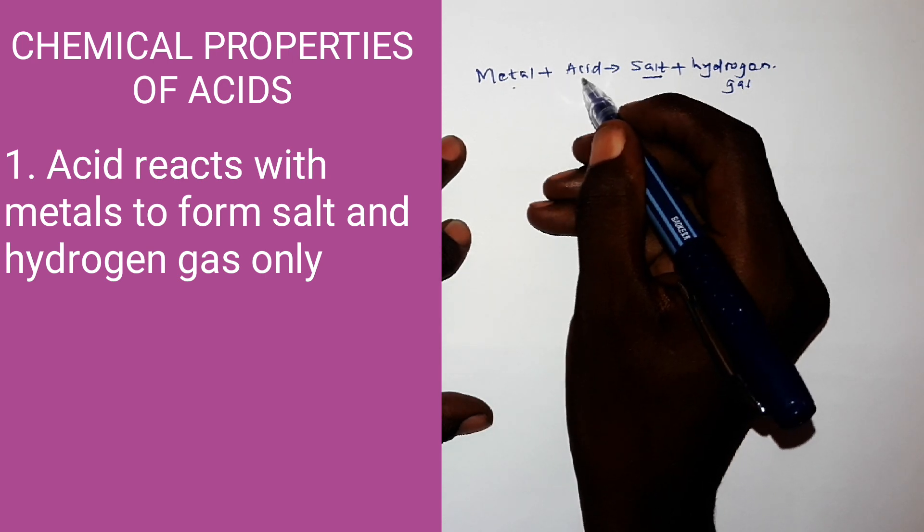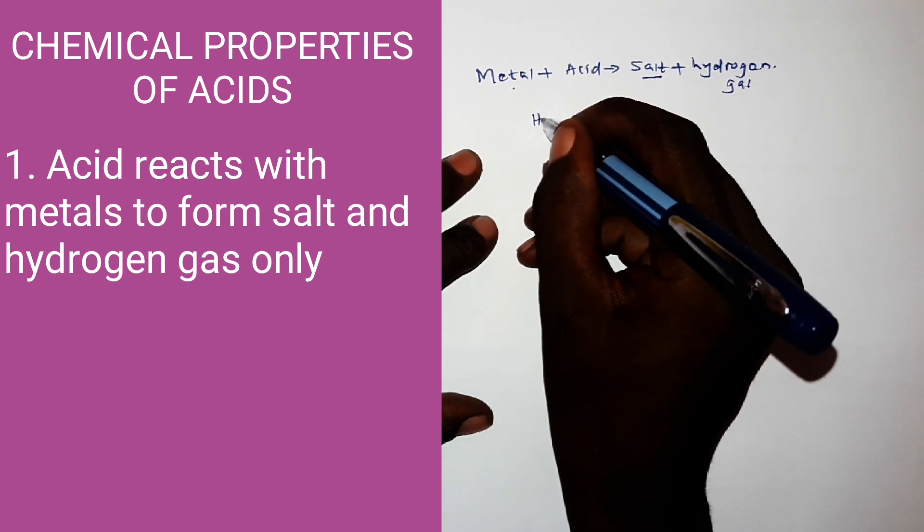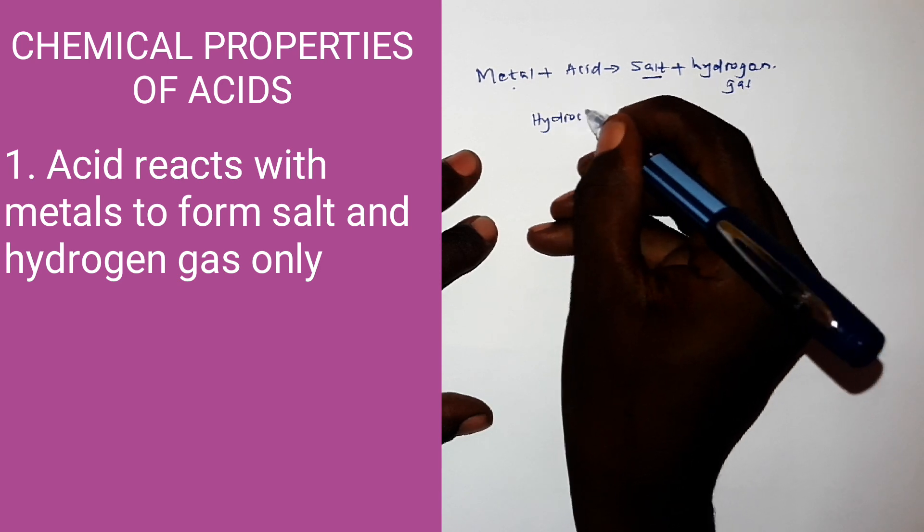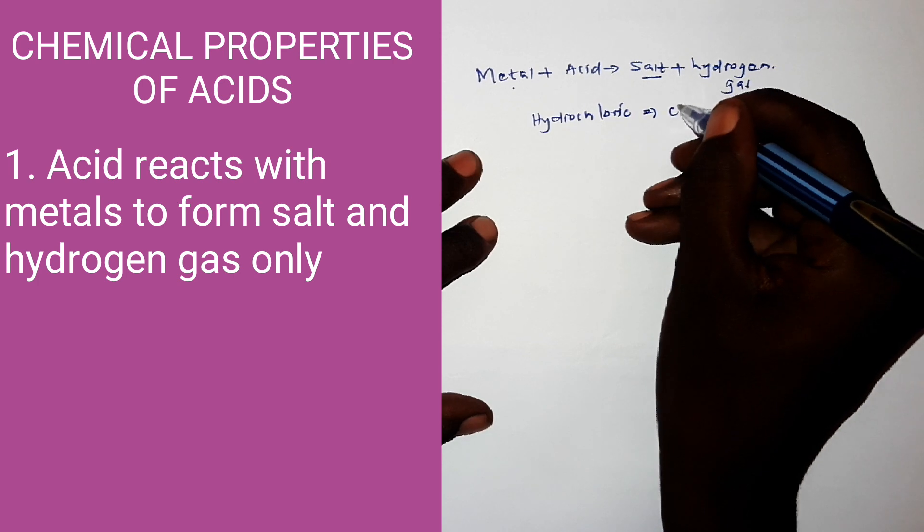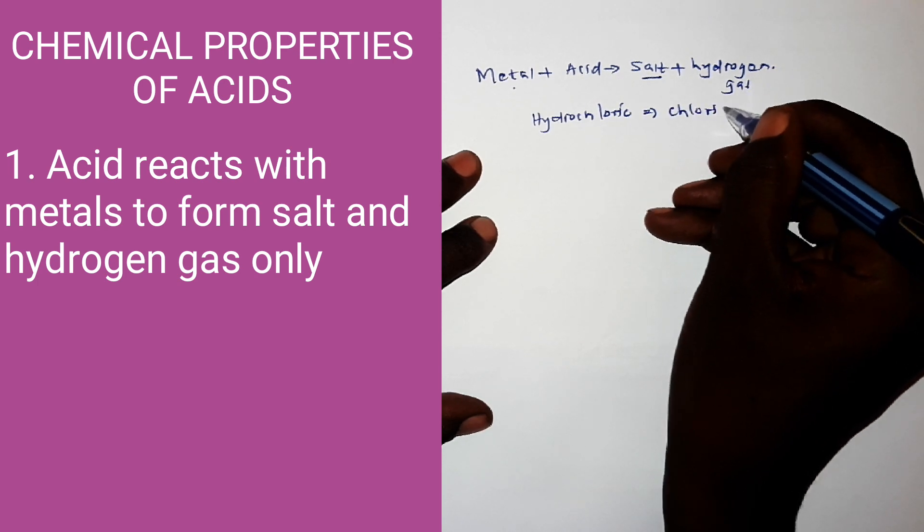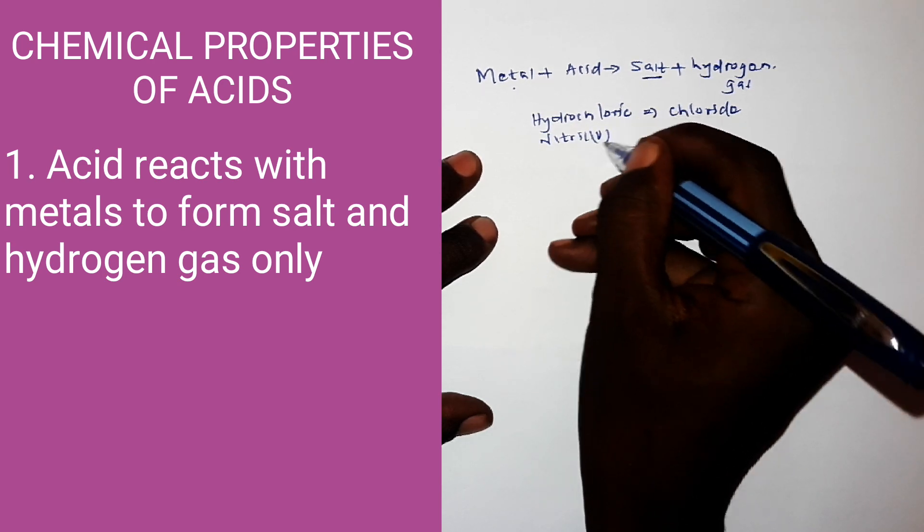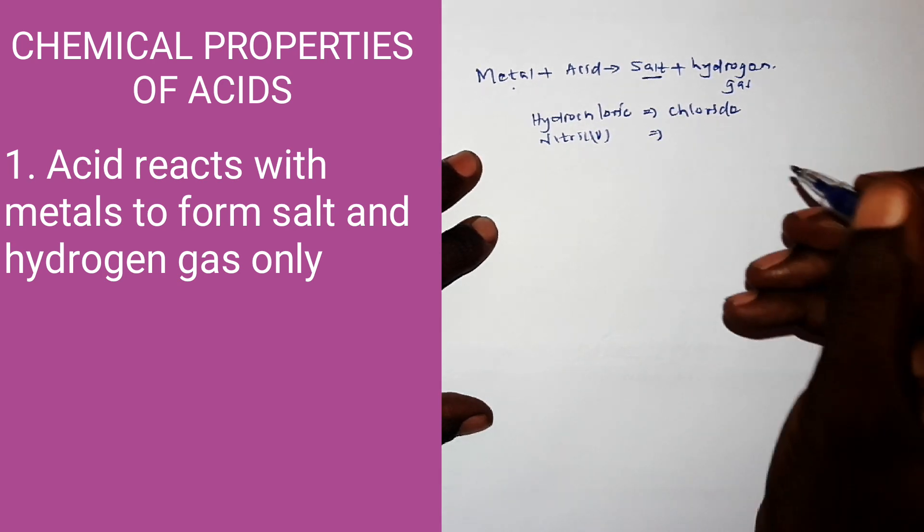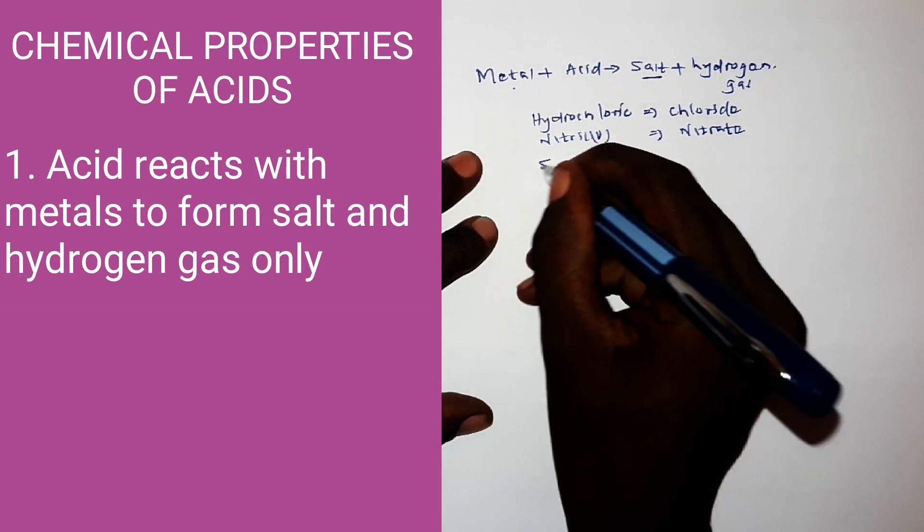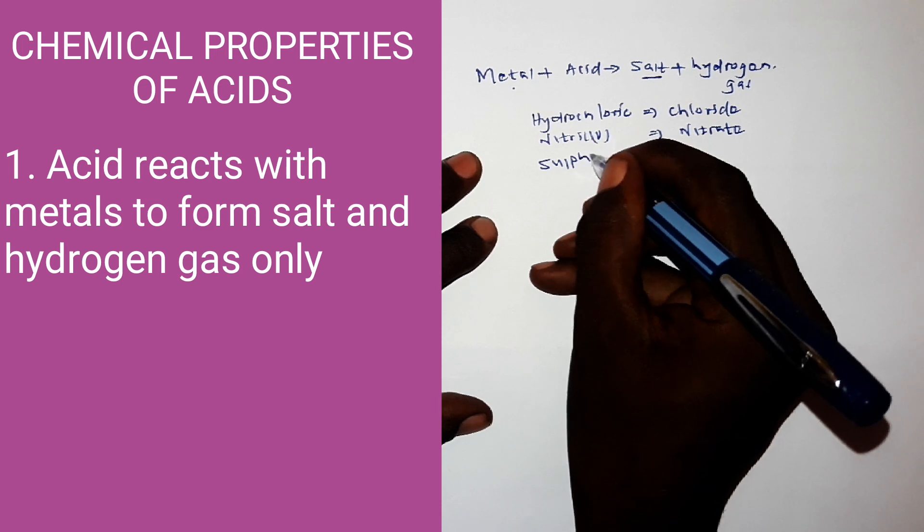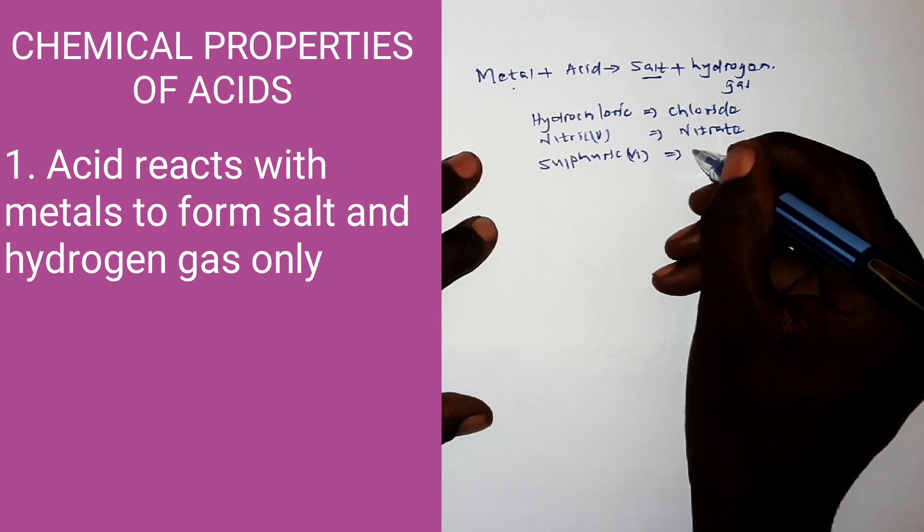Now acid radical depends on the acid you are using. If the acid used is hydrochloric acid, the acid radical you get is chloride. If the acid is nitric acid, the radical becomes nitrate. If the acid is sulfuric acid, the radical becomes sulfate.